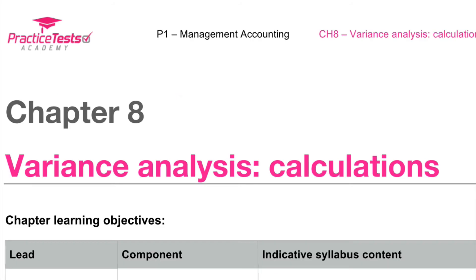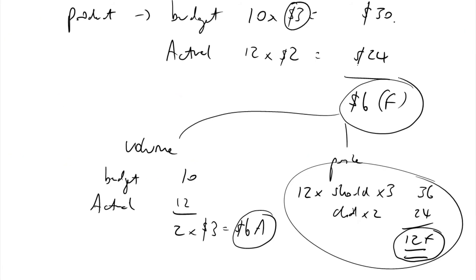We've got variance analysis calculations for chapter eight. Variances is all about comparing actual to plan and breaking down the difference between actual and plan into a volume element and a price element.